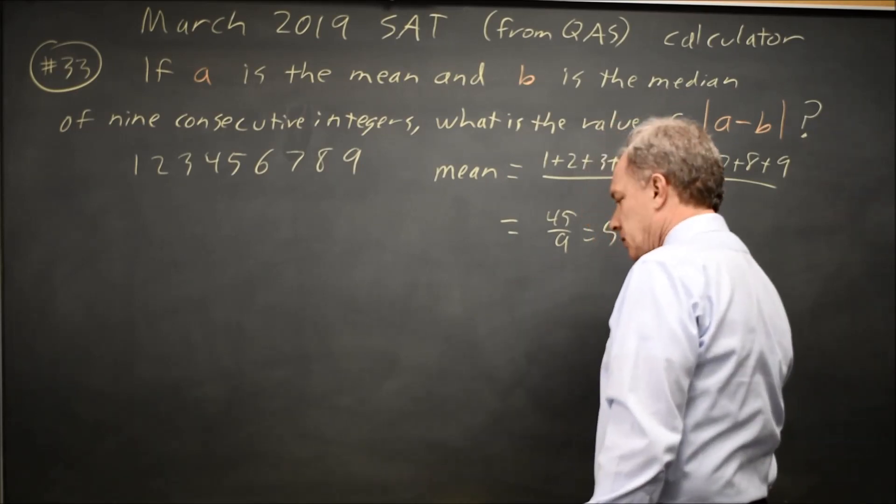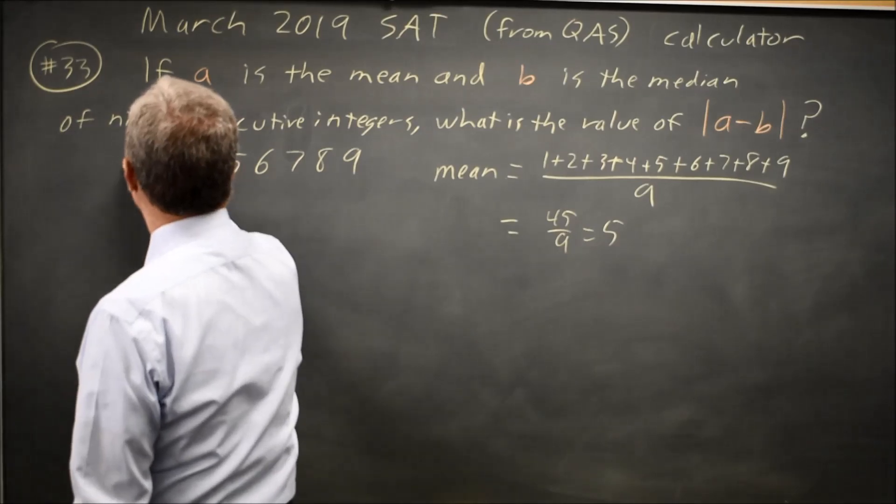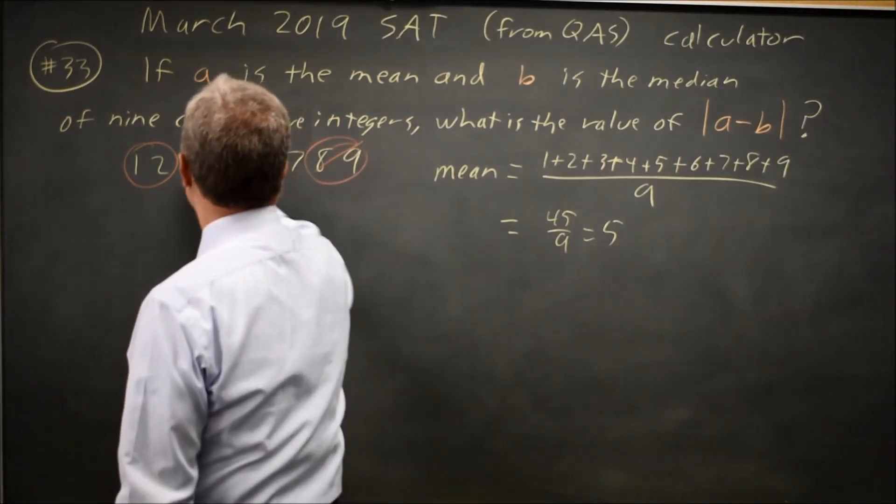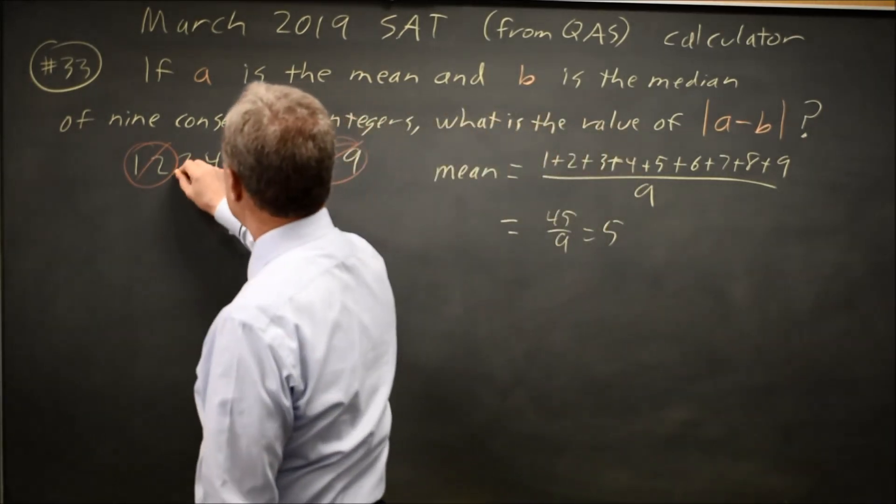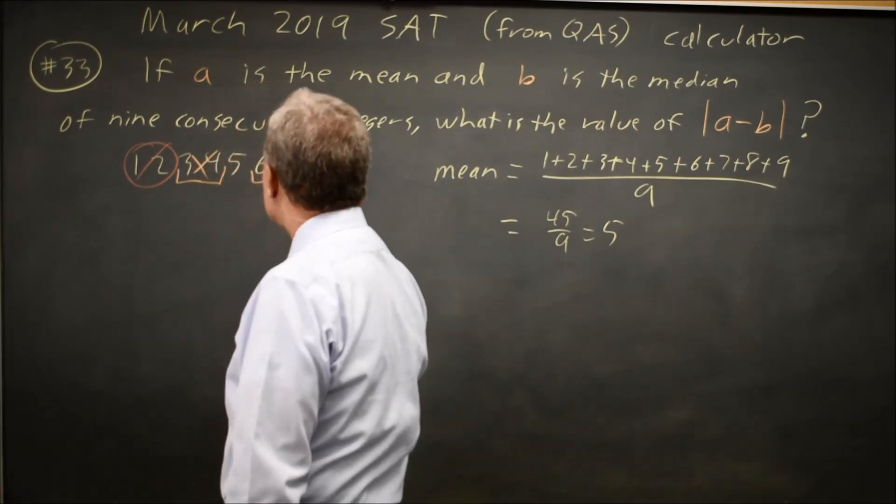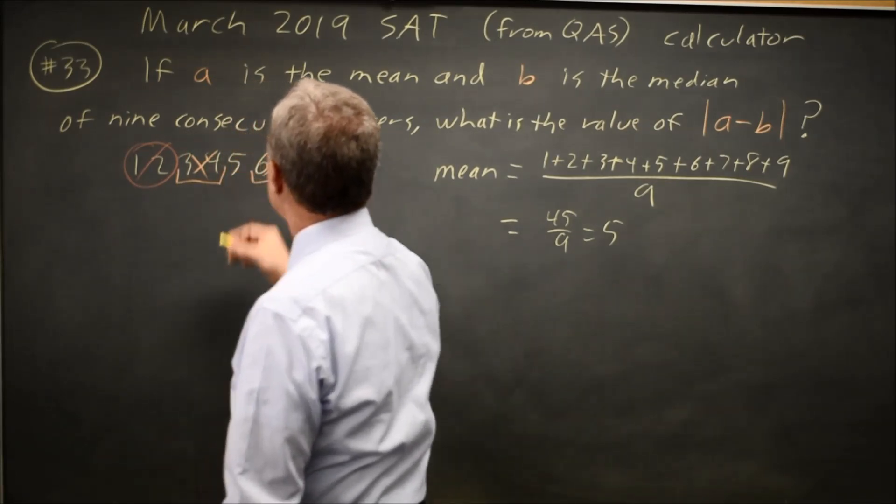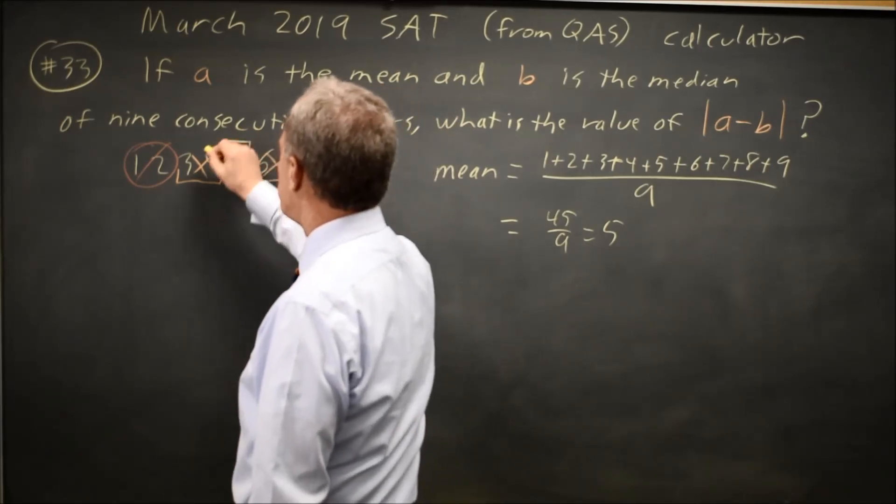The median, I'm going to want to get rid of the two lowest numbers and the two highest numbers, and then the next two lower numbers and the next two higher numbers, so I can keep track of that. And the number left in the middle, or if there's an even number, midway between the two middle numbers would be the median.